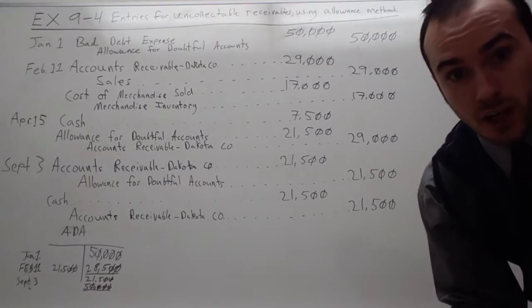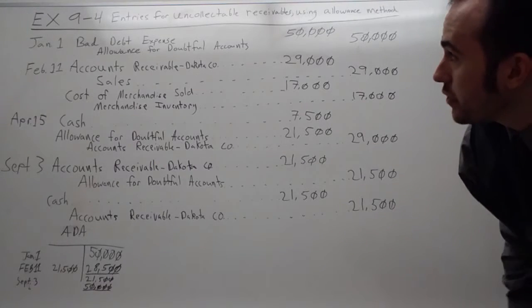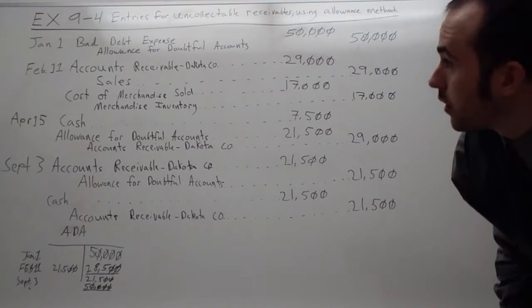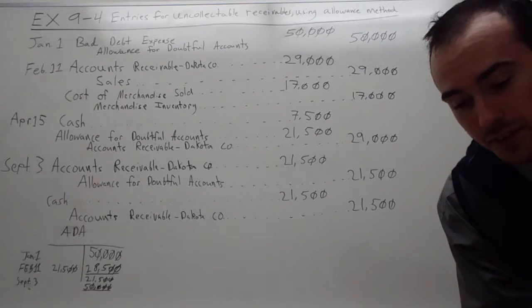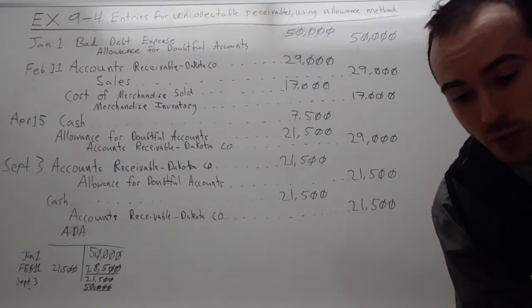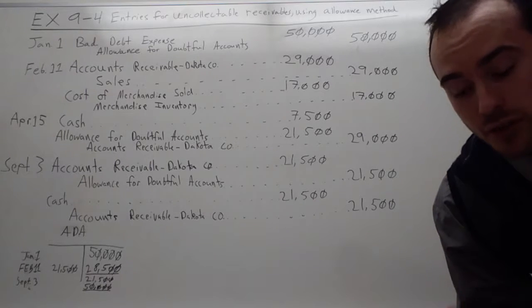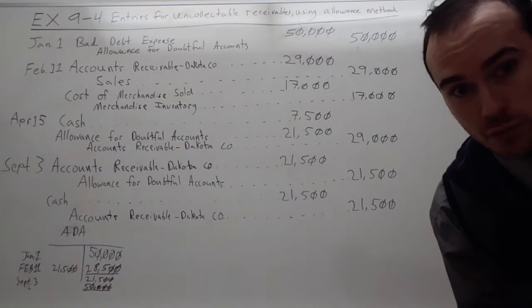So here's a synopsis. This is exercise 9-4, entries for uncollectible receivables using the allowance method. The synopsis is, journalize the following transactions in the accounts of Metro Mark Company, a restaurant supply company that uses the allowance method of accounting for uncollectible receivables.